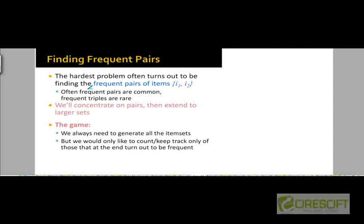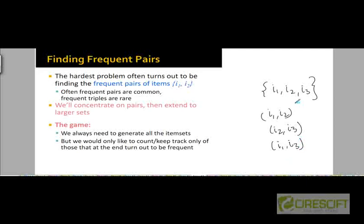The reason is that frequent pairs are going to be much more common than frequent triples. If you have many frequent triples, you're also going to have a huge number of frequent pairs. Because if i1, i2, and i3 form a frequent triple, then i1-i2, i2-i3, and i1-i3 are all going to be frequent pairs. So the number of frequent pairs is going to be much larger than the number of frequent triples.